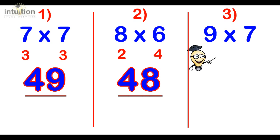Number 3, 9 times 7. So 9 is 1 away from 10 and 7 is 3 away from 10. So 7 take away 1 is 6, which we can also get by doing 9 take away 3. And then we do 1 times 3 which is 3. So the answer is 63.